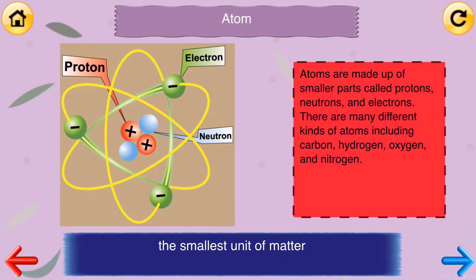Atom. The smallest unit of matter. Atoms are made up of smaller parts called protons, neutrons, and electrons. There are many different kinds of atoms including carbon, hydrogen, oxygen, and nitrogen.